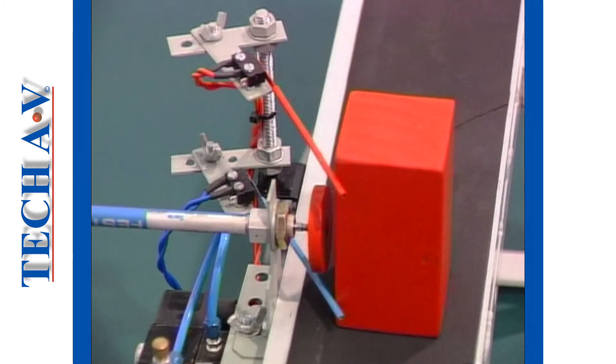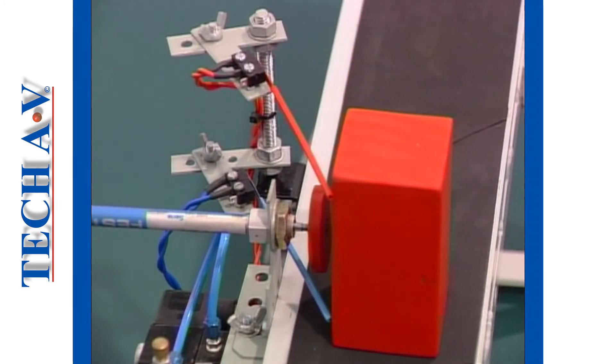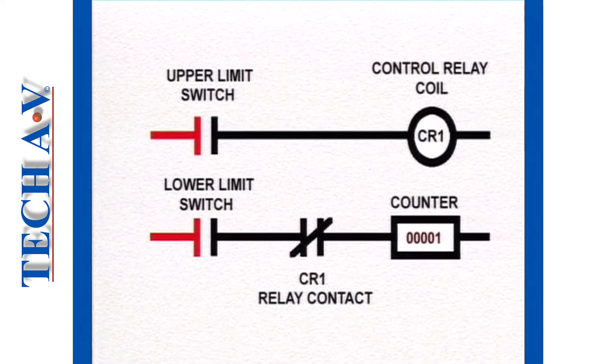Now, let's examine carefully the operation of our counter circuit. When a long block passes by, it actuates both limit switches. The lower switch closes, sending a yes signal to the logic.